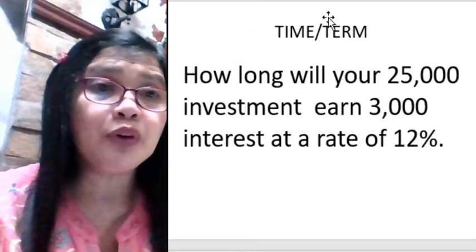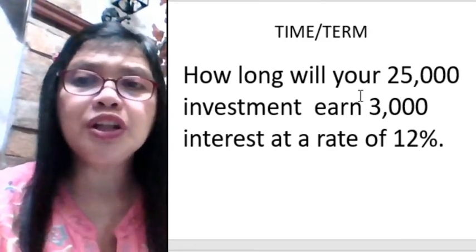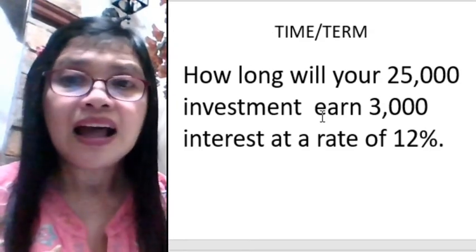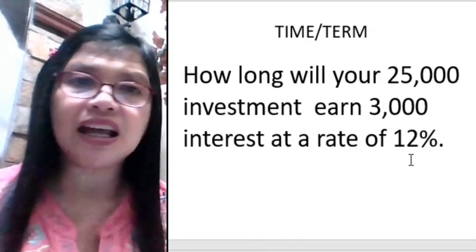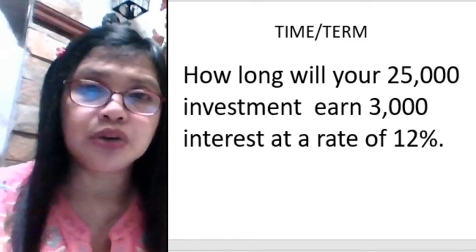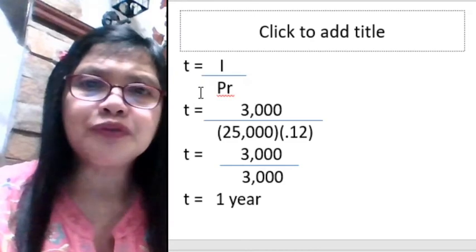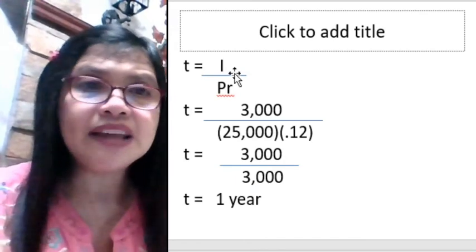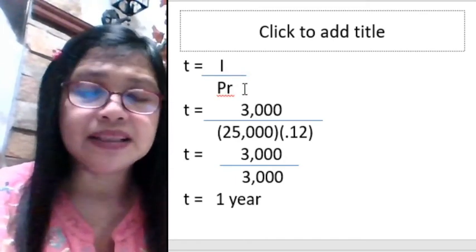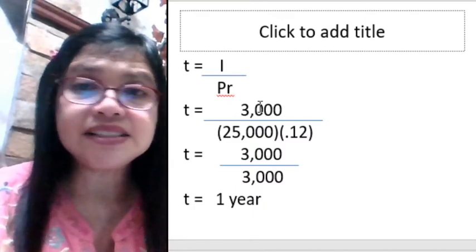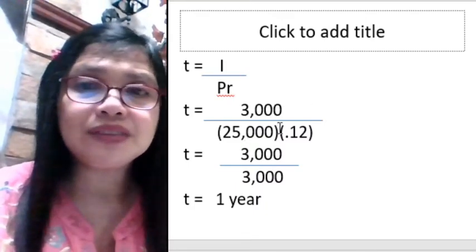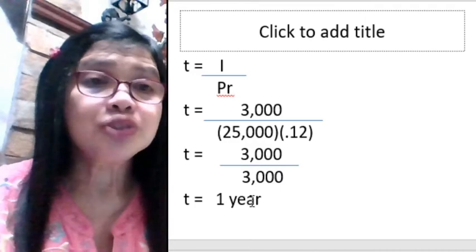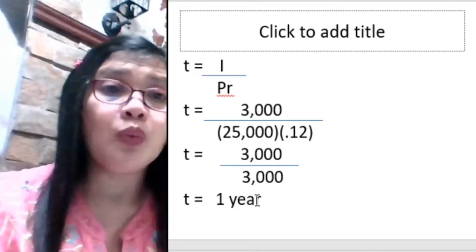Now the problem is time or term. How long did your 25,000 investment earn 3,000 interest at a rate of 12%? The formula for time is interest divided by (principal times rate): time equals 3,000 divided by (25,000 times 0.12) equals 3,000 divided by 3,000, so the term is 1 year.